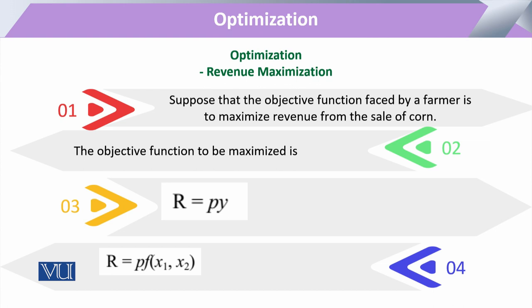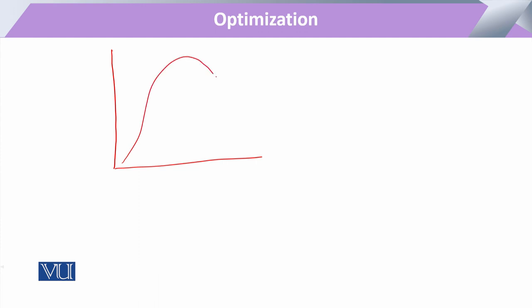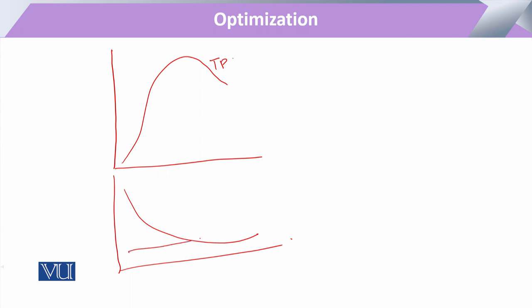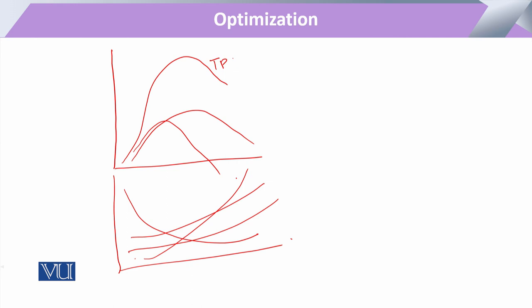To understand how to maximize revenue, we look at the production function in simple form — this is our production function where total product is available. We can identify our fixed cost, average cost, average variable cost, and marginal cost curve. In terms of total production, we have our average cost curve, and on the same basis, our marginal cost curve appears in this form.